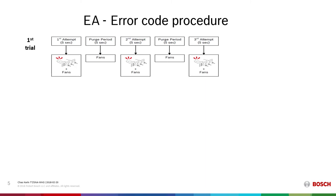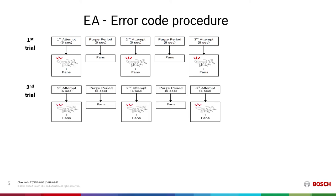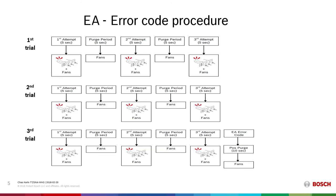The ignition process for the Green Therm classic range of tankless water heaters involves three trials to light, with three attempts each trial. The first attempt, the fans run and the igniter sparks. If it does not light, there's a purge cycle, then a second attempt with fans providing air and fuel and the igniter attempting to ignite the mixture. If it does not light, another purge cycle and a third attempt. Should this not happen, it goes into a second trial repeating that procedure, and then a third trial. Upon failure of the third trial, it will error out error code EA.